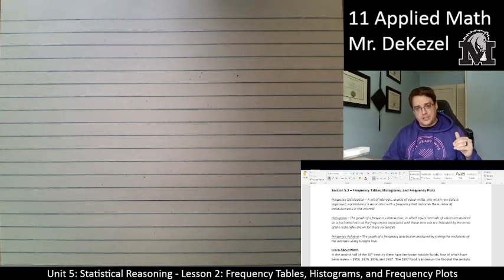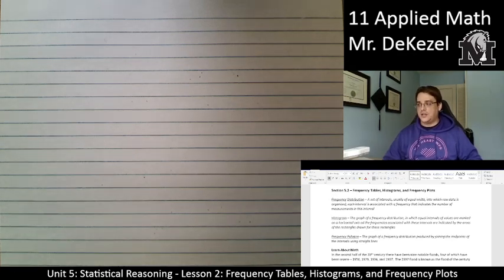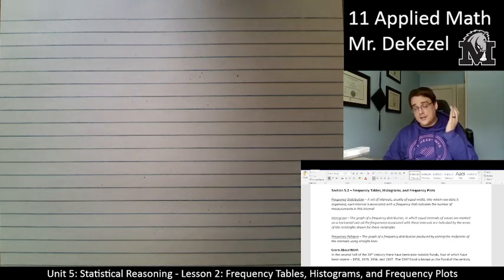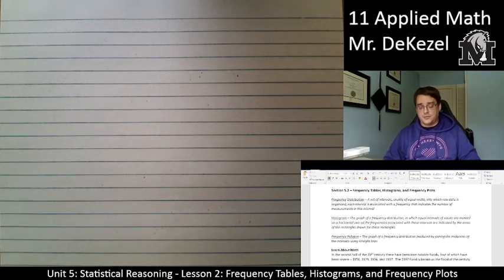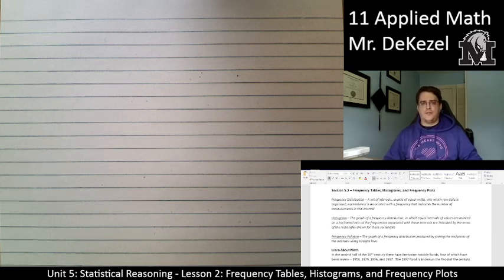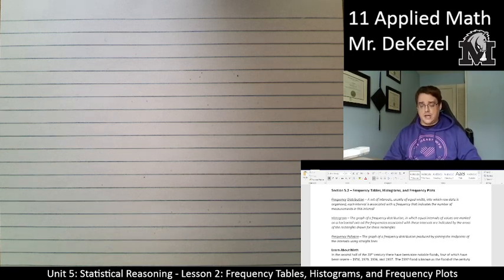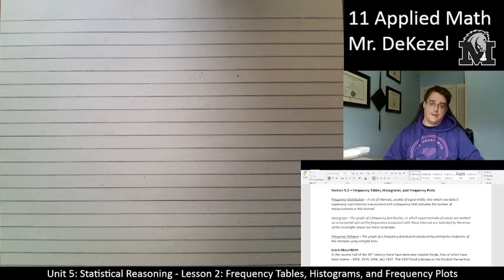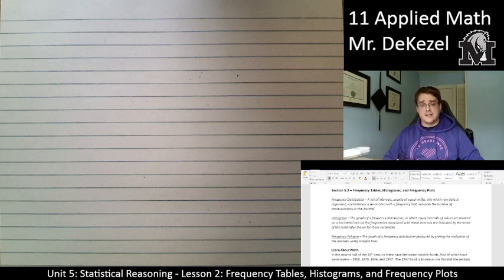We have our definitions at the top: Frequency Distribution, Histogram, and Frequency Polygon. These are essentially different types of graphs that we're going to look at. I'm not going to read these definitions - you can read them. They're full of larger terms, and if you have specific questions, please let me know. But we are going to look at these as we go down. That's what today is all about.